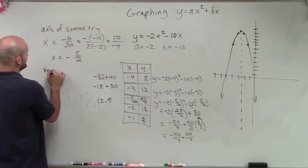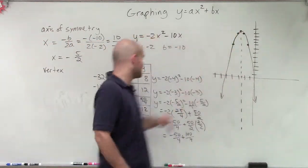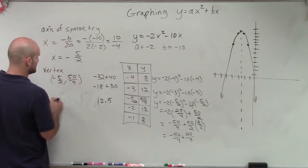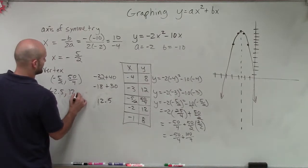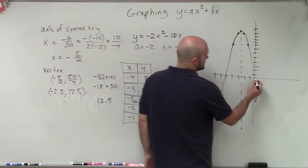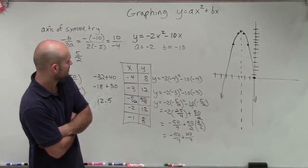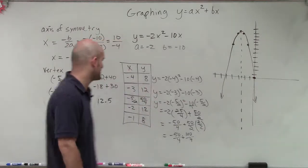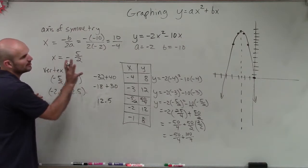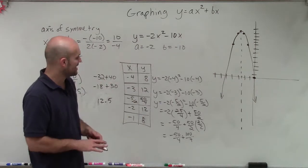Let's make sure we have our axis of symmetry and our vertex. Our vertex in this case is our maximum point, which is where the axis of symmetry goes through, at the point negative 5 halves comma 50 over 4 — or in decimals, negative 2.5 comma 12.5. It does look like the graph crosses at 0, 0 for one intercept, and there is another intercept as well, which we'll cover in other videos. And that, ladies and gentlemen, is how you graph your equation. Thanks.